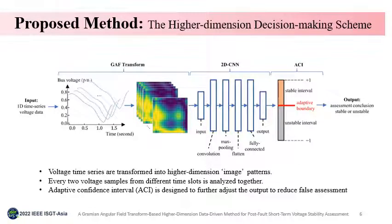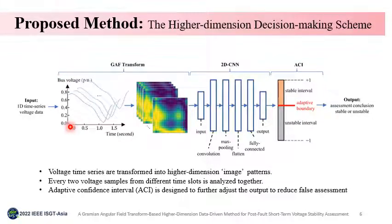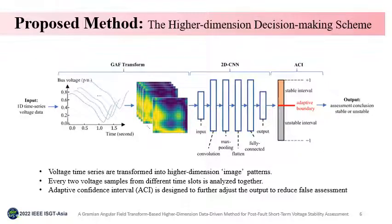The proposed higher dimension decision-making scheme consists of GAF transform, 2D CNN, and the Adaptive Confidence Interval ACI. First, the input voltage time series of each bus would be converted into 2D by the GAF transform. Then, the 2D CNN with a convolution layer, a max pooling layer, a flattened layer, and a fully connected layer would analyze the obtained images and output a floating point value. The ACI will further decide the assessing conclusion regarding the interval range that the value belongs to. This ACI part is designed to reduce false positives, which refers to an incorrectly drawn stable conclusion, by setting a stricter classification criterion.